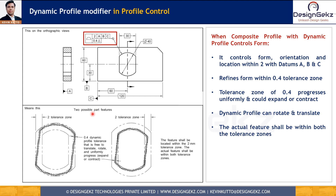The 0.4 dynamic profile refines only form and cannot prevent translation or rotation. The 0.4 tolerance zone can expand and contract uniformly as shown. As long as surfaces lie within both tolerance zones, the part is acceptable — so the bigger tolerance zone is 2 mm and the smaller form-controlling zone is 0.4 mm. All surface variations must be controlled within both tolerance zones, but rotation is not restricted; only form is controlled through uniform contraction and expansion.